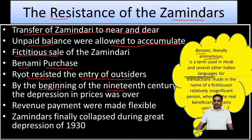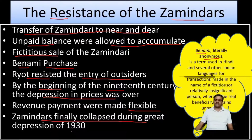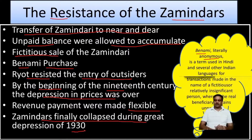By the beginning of the 19th century, the depression of prices was over — prices of crops improved considerably and revenue payment was no longer a major problem. The company also relaxed the revenue rate and made it more flexible. The Zamindar finally regained hold of their property. However, they eventually collapsed during the Great Depression which came in 1930. Before that, the Zamindars had remained in a powerful position by finding ways and means to protect their land and property.